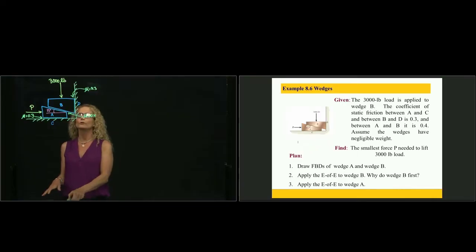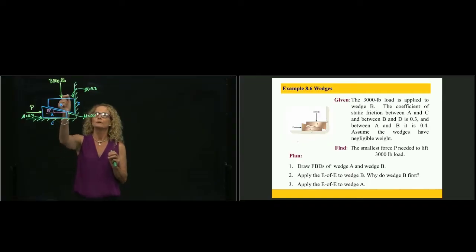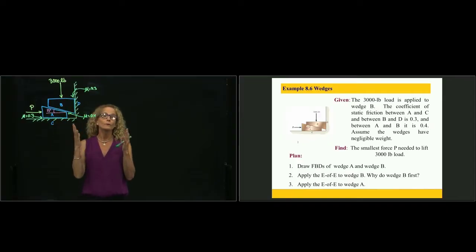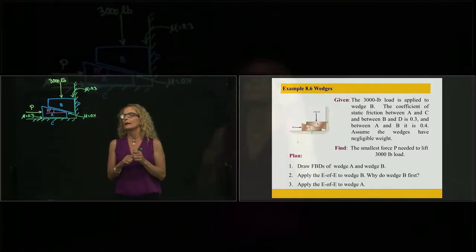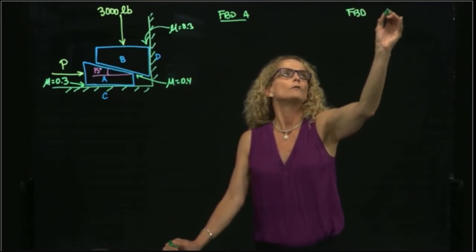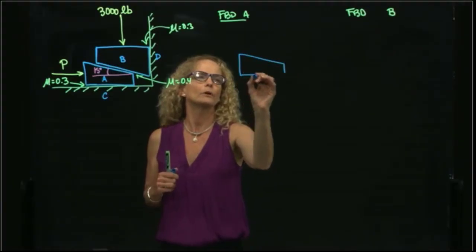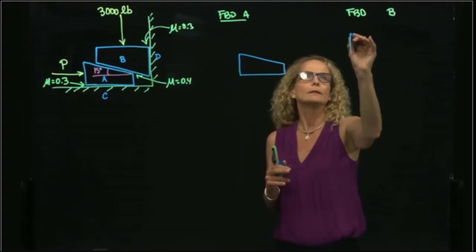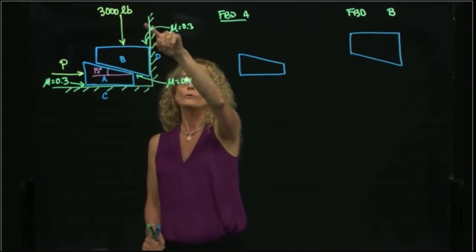I'm going to draw the free body diagrams of the two wedges simultaneously so we understand what is happening. We want to find the force P in order to lift wedge B. We already know the tendency of motion — we are still in equilibrium, but we will analyze the system in impending motion. The weight of each wedge is neglected compared to the applied load.